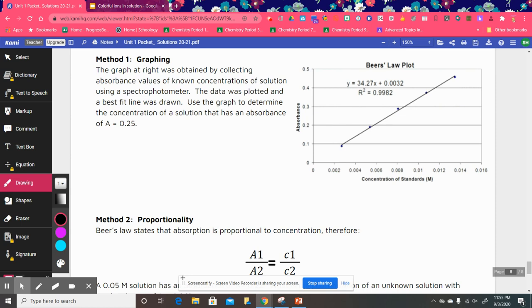So then you can use the graph to determine the concentration of solution has an absorbance of 0.25. We're going to use slope intercept formula where y equals mx plus b, where really it's A. We're going to put that 0.25 equals m.